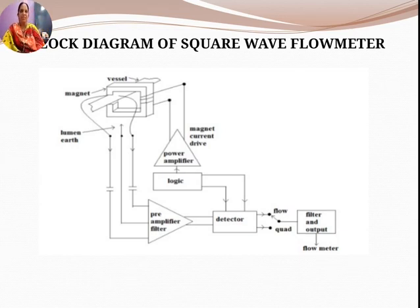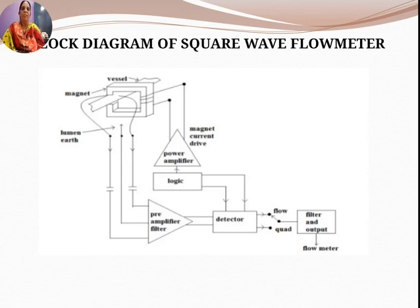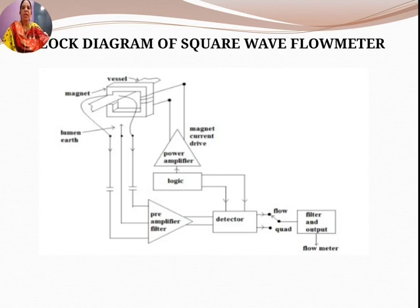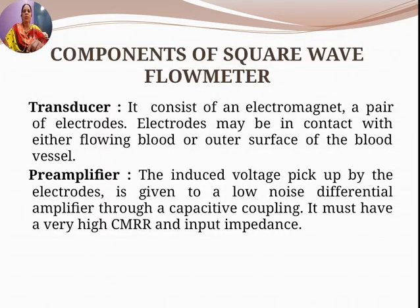In the block diagram of the square wave electromagnetic flow meter, a permanent magnet is placed around the blood vessel and blood is allowed to flow through the vessel. The system consists of a power amplifier, a pre-amplifier, a detector, a filter, and an output stage.